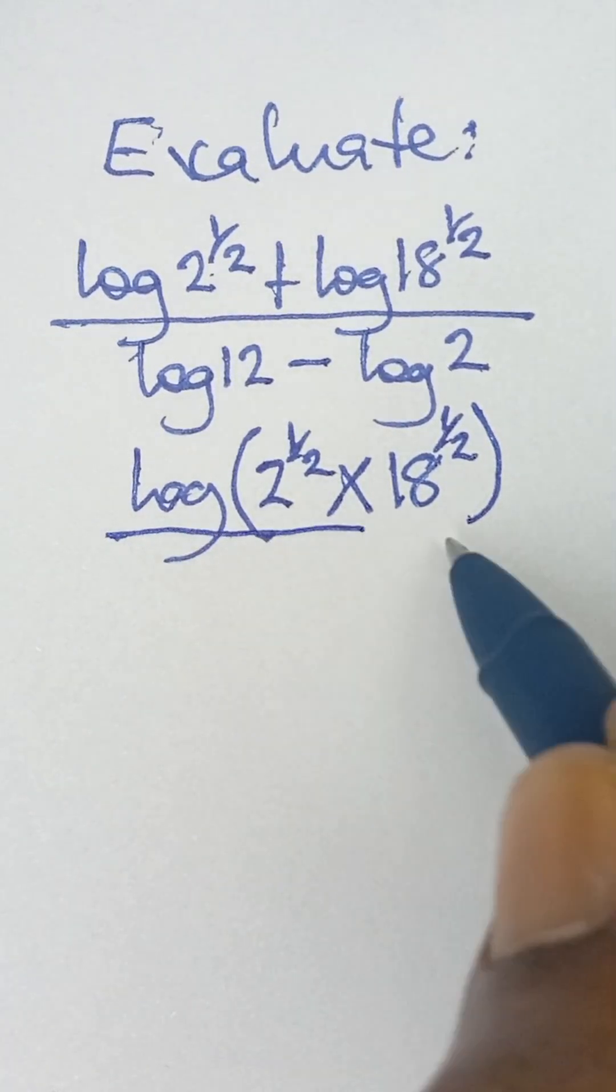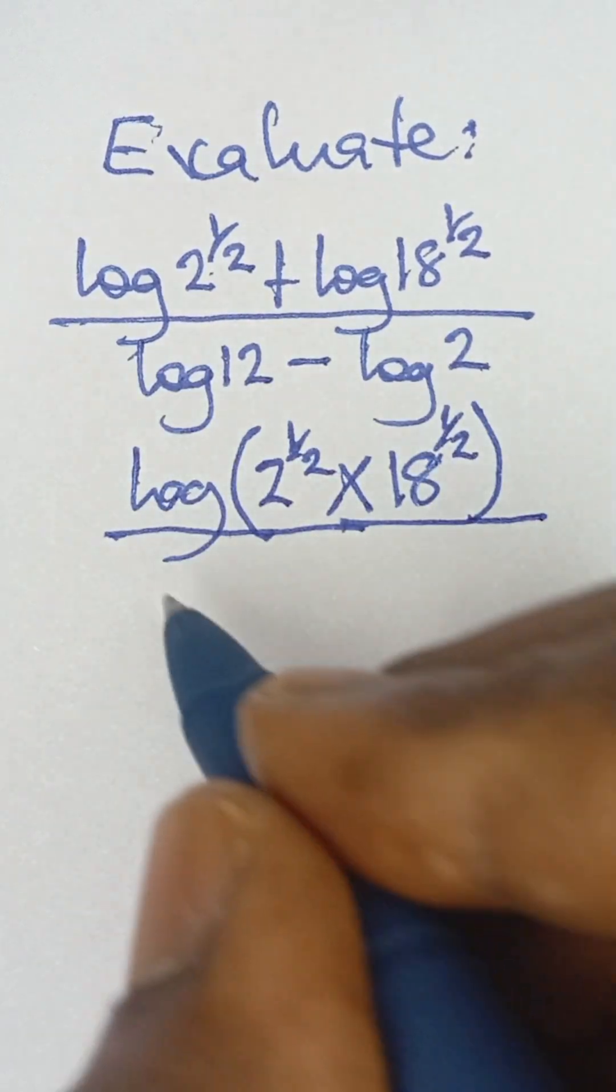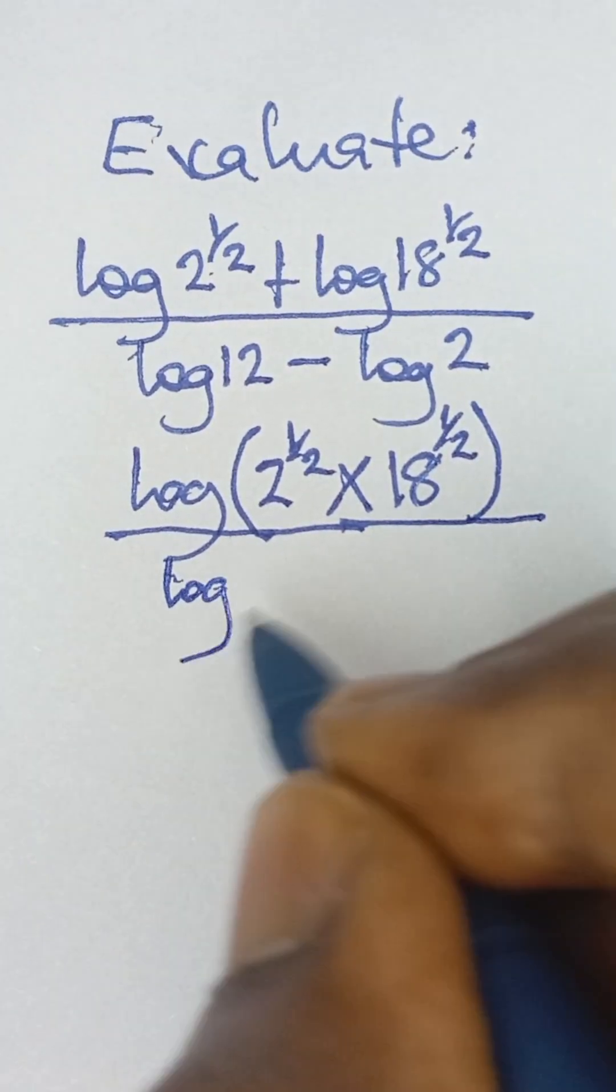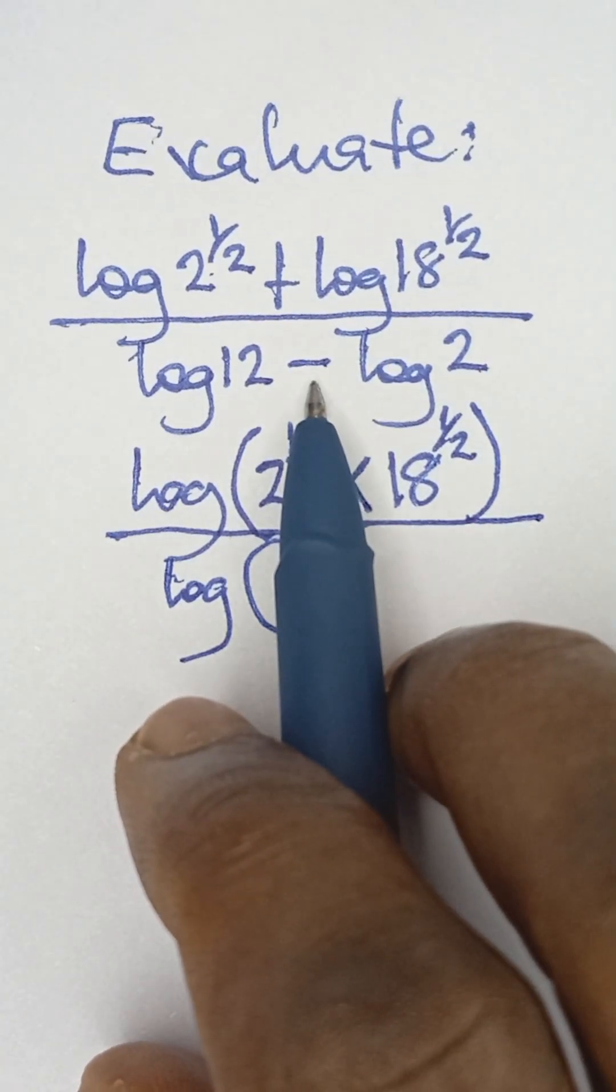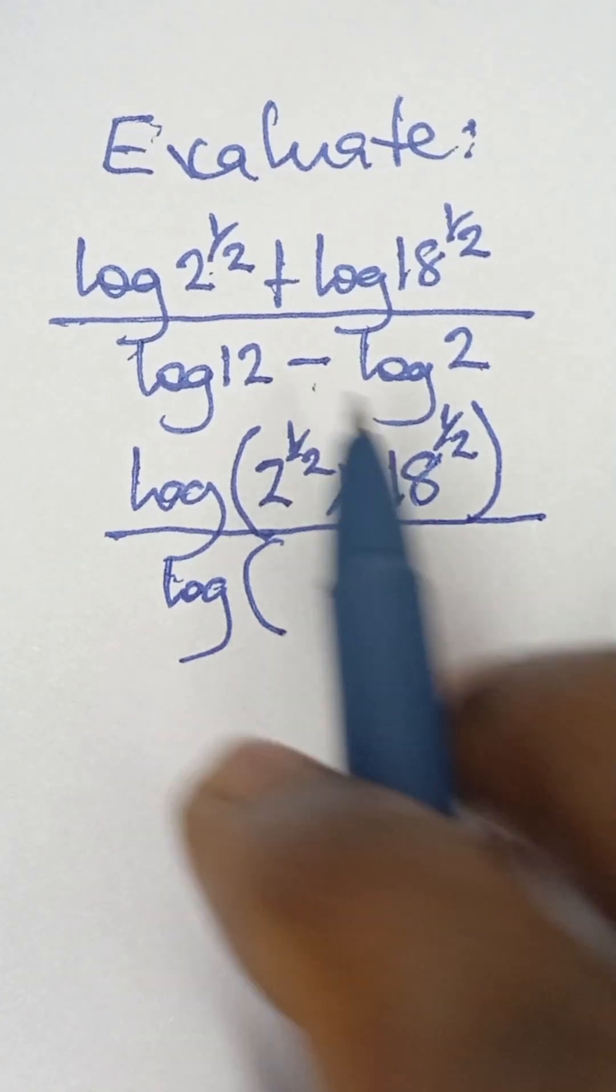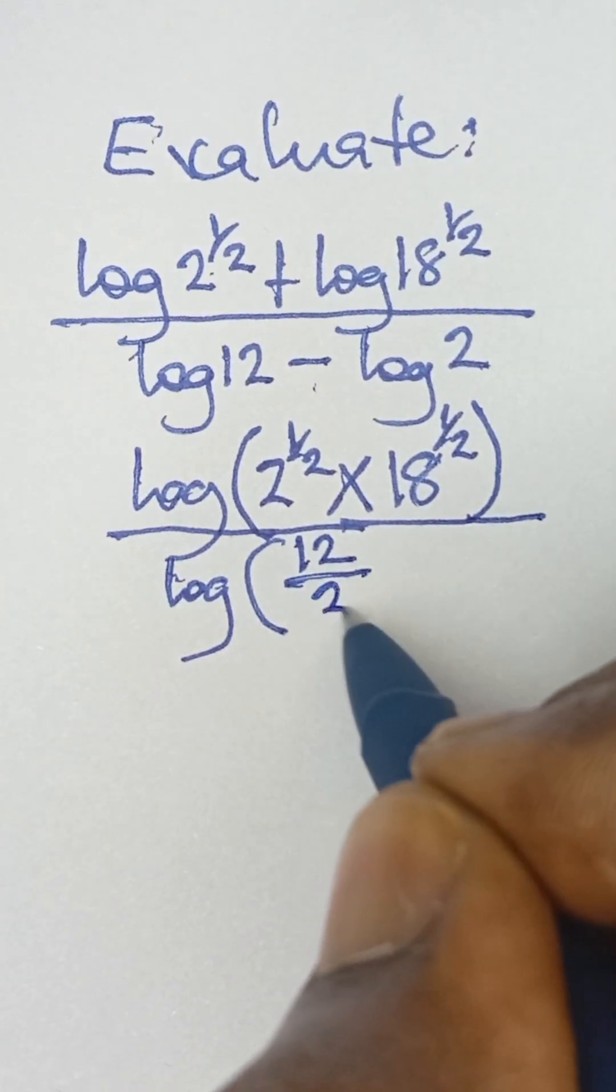And then in the same way, because of what we have down here, we are also going to take log, we open brackets. Now this case is subtraction. So from the theory of logarithm, when there is subtraction, we simply divide the terms. So it becomes 12 all over 2.